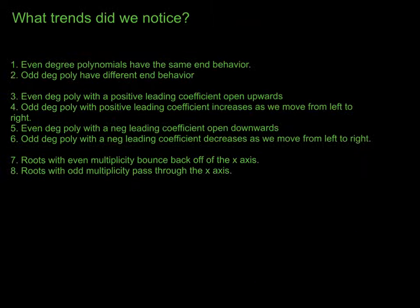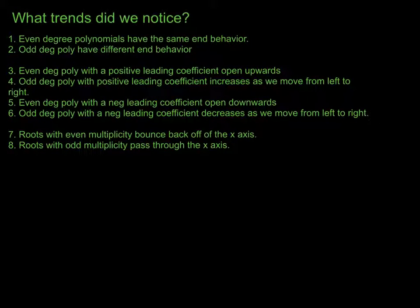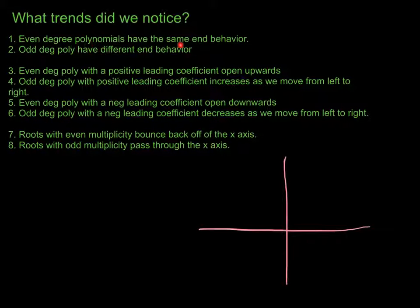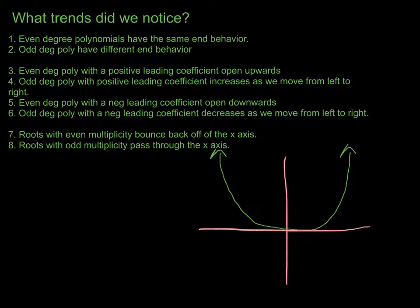So what trends are we noticing? The first thing we notice is that even-degree polynomials — x squared, x to the 4th, x to the 6th, x to the 8th — have the same end behavior. For example, graphing x to the 4th: as we push out in the positive direction the function is increasing, and as we push out in the negative direction the function is also increasing. That's the nature of an even-degree polynomial — same end behavior on both sides.